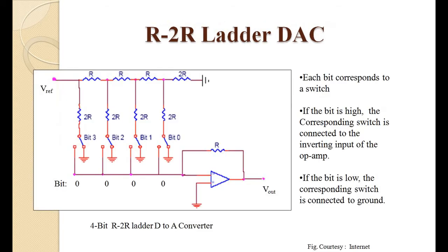Here is the circuit diagram of the R-to-2R ladder type digital-to-analog converter for four bits specifically. We are having a number of resistors. Always we need n resistors for n bits. For 4-bit, we have four 2R-type resistors and three R-type resistors. The last resistor connected to ground will always be 2R. So for n bits, we need n+1 number of 2R resistors and n−1 number of R resistors.